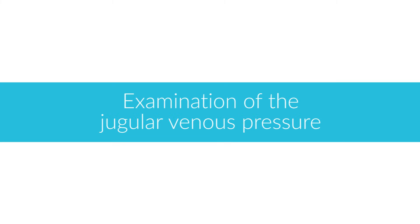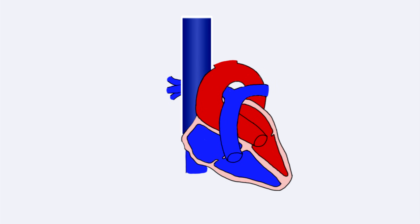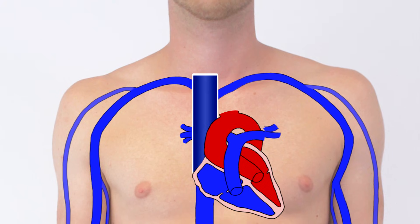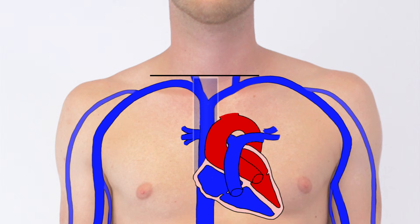Examination of the Jugular Venous Pressure. The central venous pressure, or CVP, is the pressure within the thoracic vena cava just before the right atrium. The superior vena cava and the connecting jugular veins act as a column of blood in which the CVP can be approximated by determining the jugular venous pressure. This is done by measuring the elevation of the neck veins above the sternal angle and correlating it to the height of the blood column in centimeters of water.